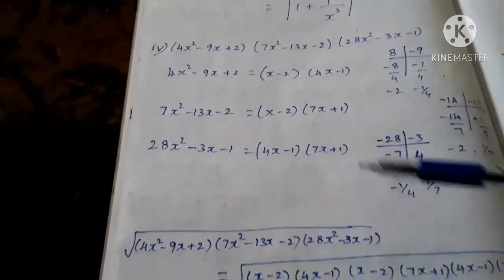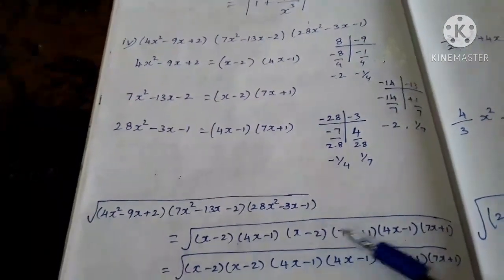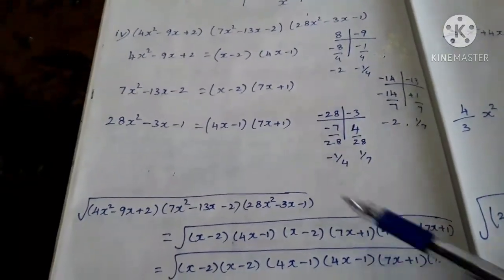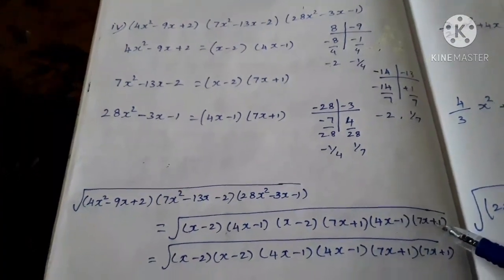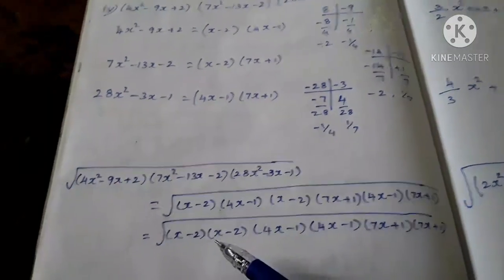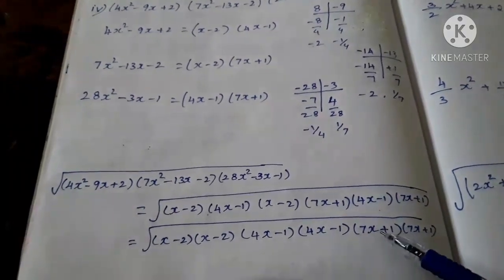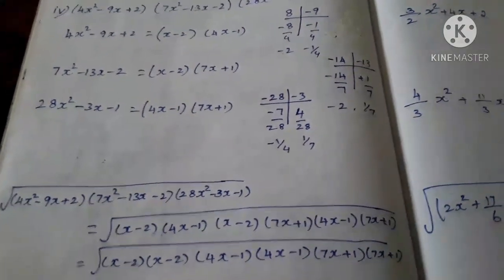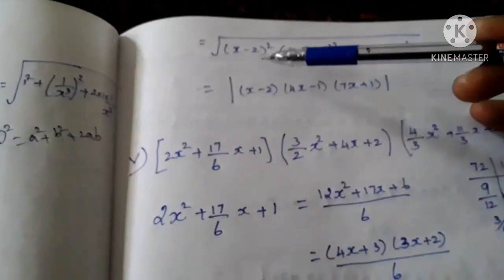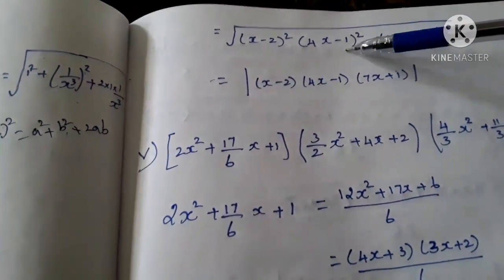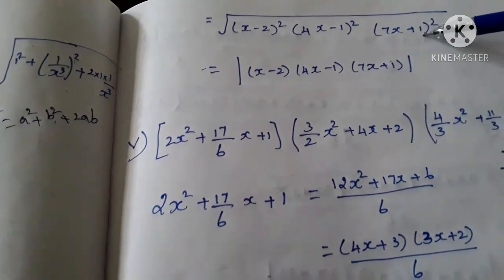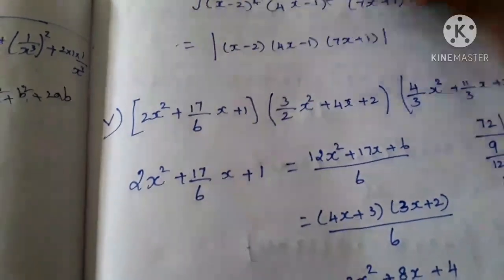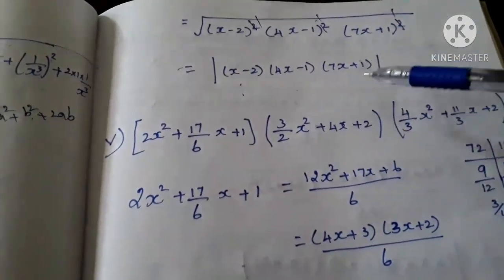Now we substitute the factors: first polynomial = (x − 2)(4x − 1), second = (x − 2)(7x + 1), third = (4x − 1)(7x + 1). We join the same factors together: (x − 2)(x − 2) = (x − 2)², (4x − 1)(4x − 1) = (4x − 1)², and (7x + 1)(7x + 1) = (7x + 1)². Square root and squares cancel. So our answer is (x − 2)(4x − 1)(7x + 1).